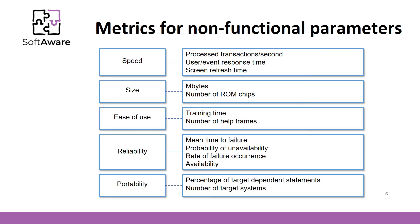In this table, you can see the most common metrics of non-functional analysis. These are speed, size, reliability, and portability. Speed can be measured by process transactions per second, user per event response, or even by screen refresh time. Size is usually measured by megabytes. Ease-of-use measure is based on training time or number of help frames. Reliability could be measured by mean time of failure or availability.